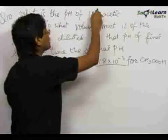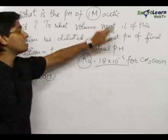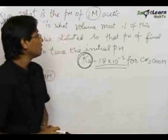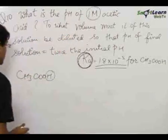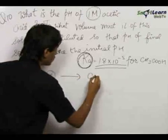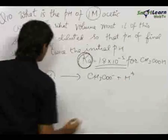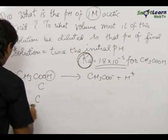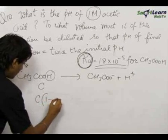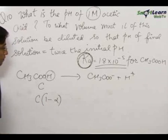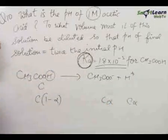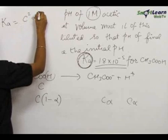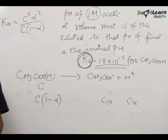You cannot directly say that the concentration of acetic acid equals the concentration of hydrogen ion, because acetic acid is a weak acid with a low dissociation constant — only a small amount of H⁺ will form. Consider the reaction: CH₃CO₂H dissociating into CH₃CO₂⁻ + H⁺. Let initial concentration be C and the degree of dissociation be α. At equilibrium: C(1−α), Cα, and Cα respectively. Ka = C²α² / [C(1−α)].